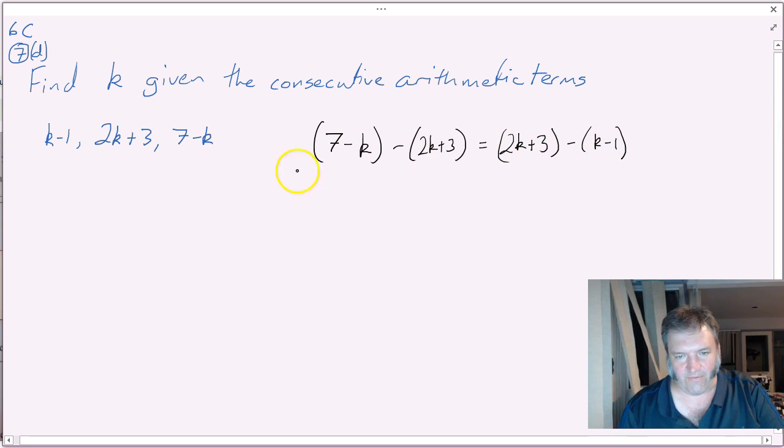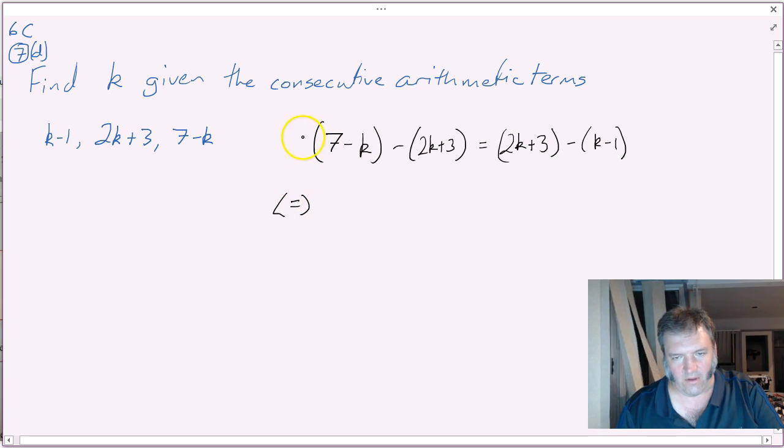Now it's just simplify, and we're home. No coefficient here, so that's just going to be 7 minus k. Using my distributive law, negative 2k and negative 3, when I distribute the negative in front of the brackets, that'll be minus 2k minus another 3.